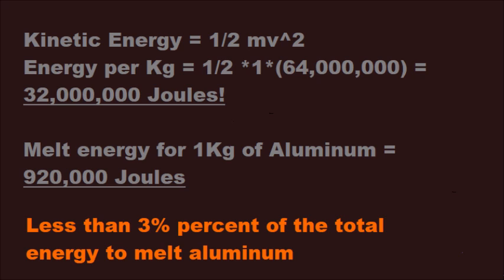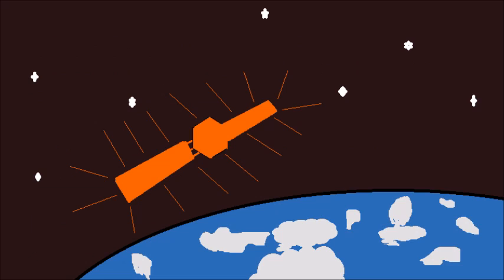Now, not all the kinetic energy is converted into heat that gets into the satellite. As the satellite heats up, it starts to radiate away much of the heat it has acquired. Also, energy is released into air that surrounds it.